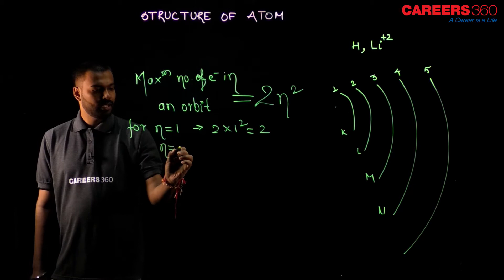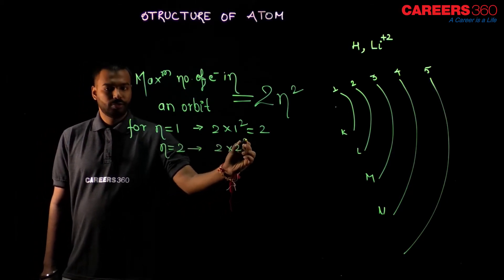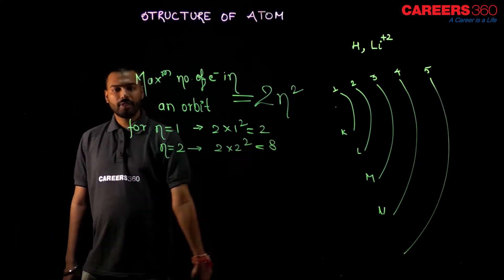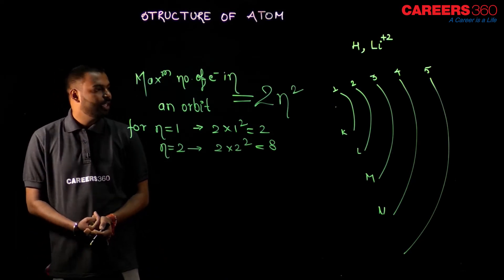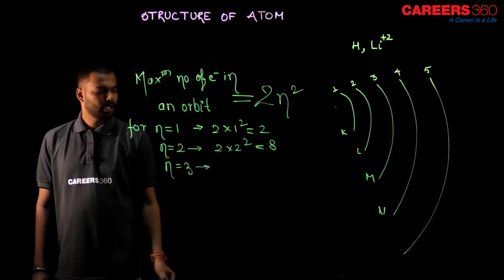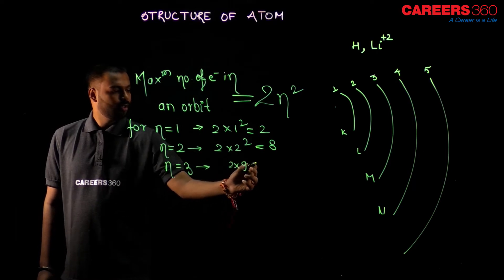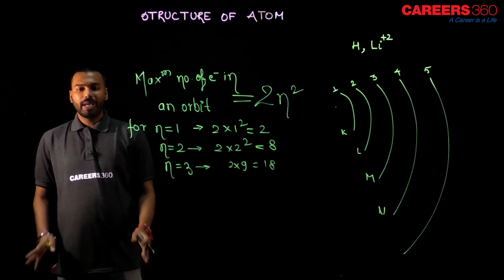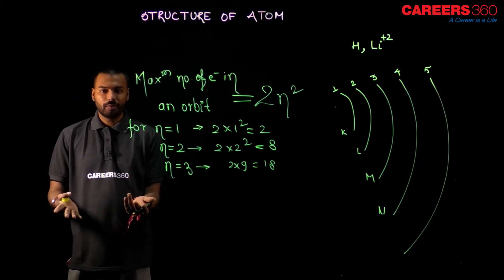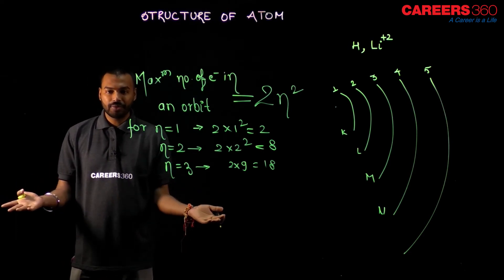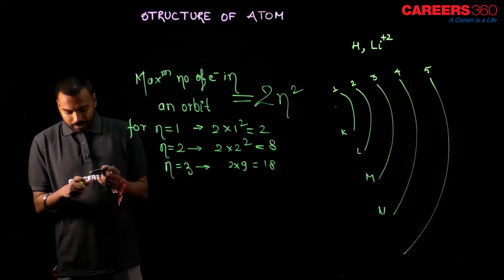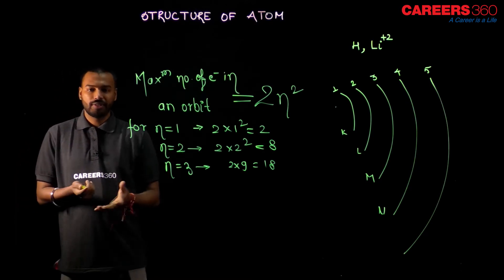For N = 3: 2 × 3² = 18. So in the third orbit, the maximum number of electrons that can live is 18. More than 18 electrons cannot live in the third orbit — 17, 14, or 1 electron can live with no problem, but not more than 18. This is how Bohr tells us all the important points about his atomic model slowly.